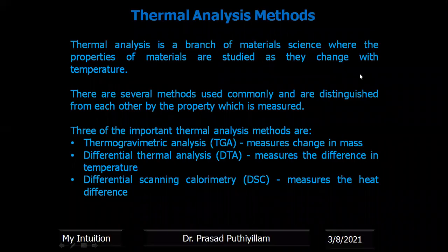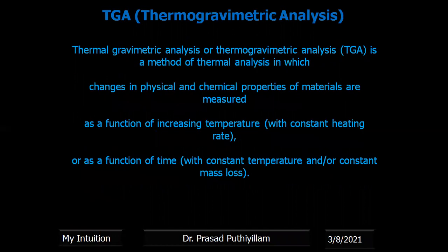Thermal analysis methods is a branch of material science where the properties of materials are studied as they change with temperature. There are several methods used commonly which are distinguished from each other by the property which is measured. Three of the important thermal analysis methods are TGA, DTA and DSC. This particular class video is for TGA, which measures the change in mass.